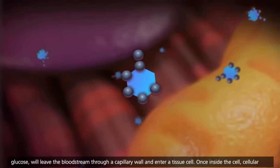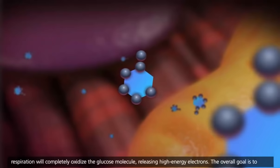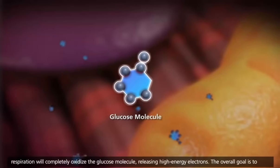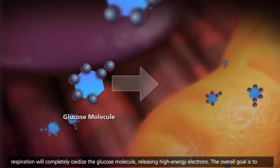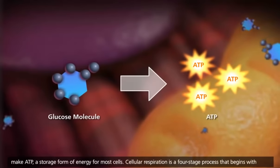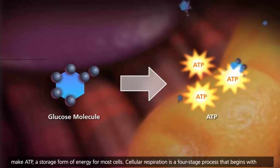Once inside the cell, cellular respiration will completely oxidize the glucose molecule, releasing high-energy electrons. The overall goal is to make ATP, a storage form of energy for most cells.